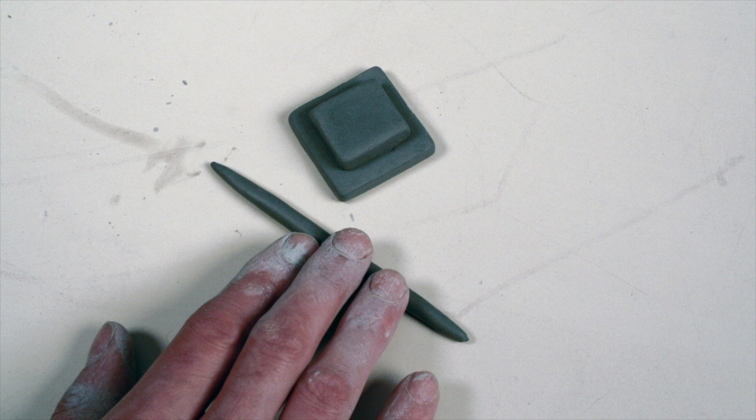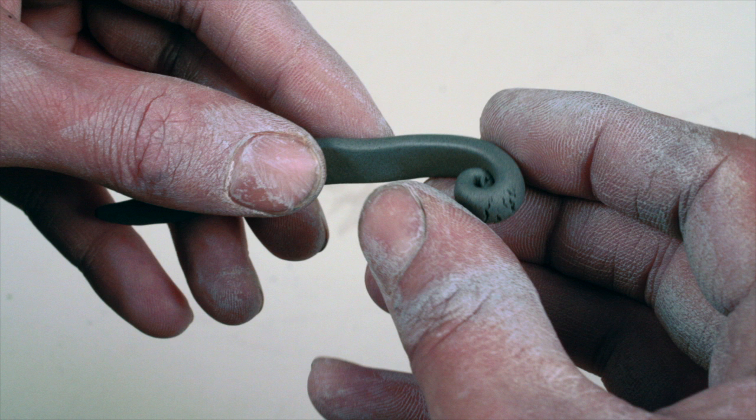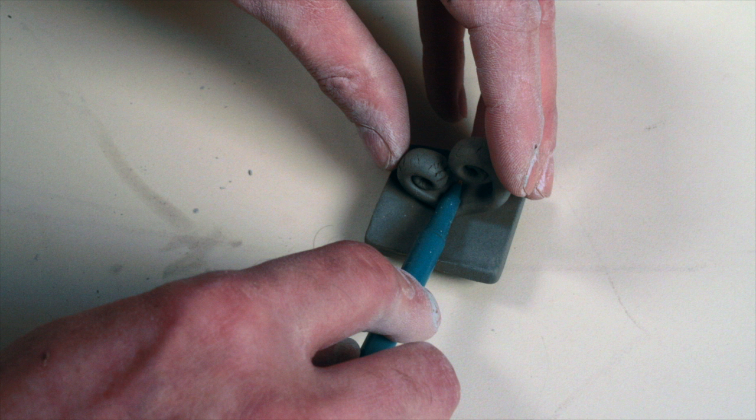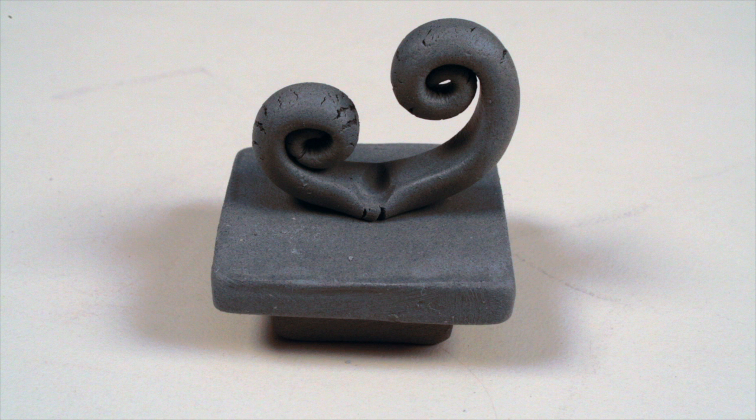Now, roll out a coil to make the handle. Roll the coil in on itself to create two spirals. Score and slip the top of the lid and then use a pencil to firmly attach the handle.